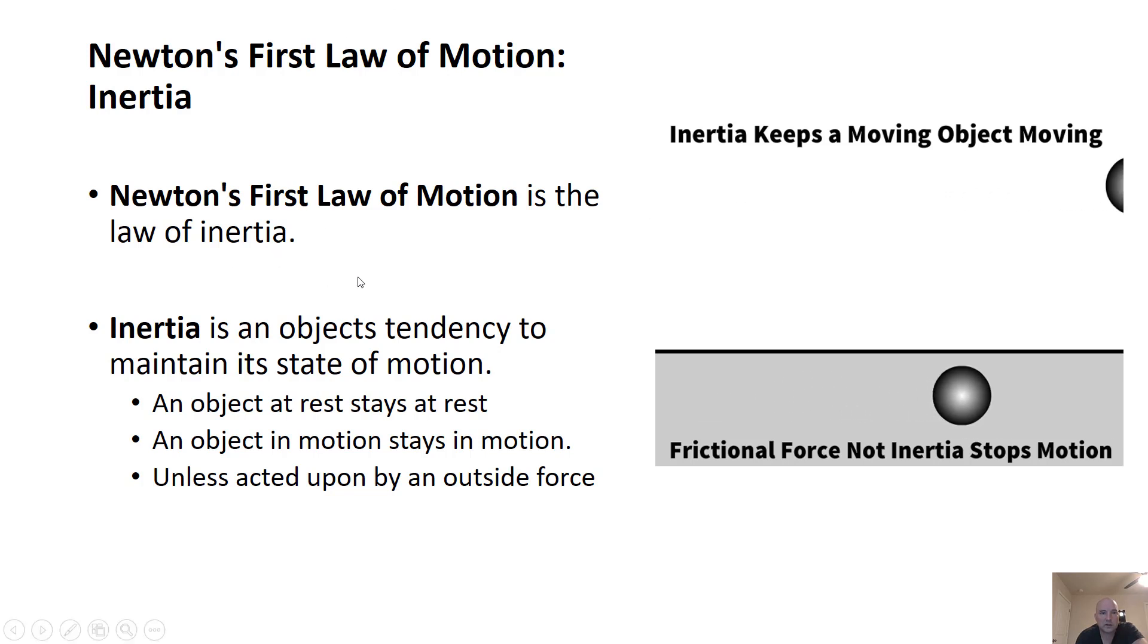Inertia, which is the first law of motion, is an object's tendency to maintain its state of motion. So if it's at rest, it's going to stay at rest. If it's already moving, it's going to stay moving, unless acted upon by an outside force. So frictional force, an outside force, might stop an object.